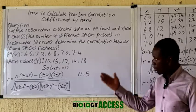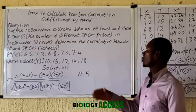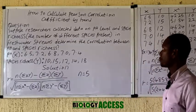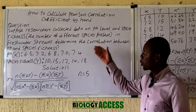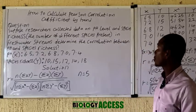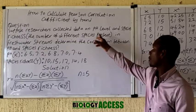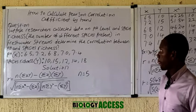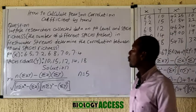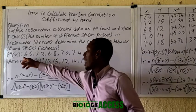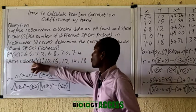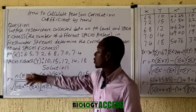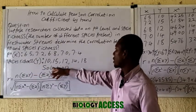So let's quickly take a look at how we calculate Pearson's correlation coefficient by hand. The question is displayed on the board. The two variables are the pH and the species richness. The value for pH is given as x, and the value for species richness is given as y, with five values displayed on the board.